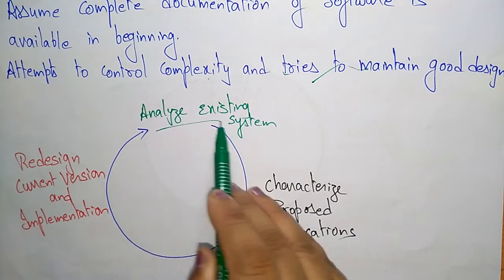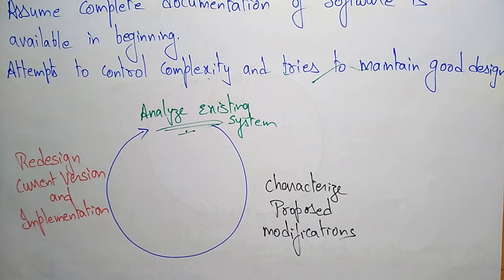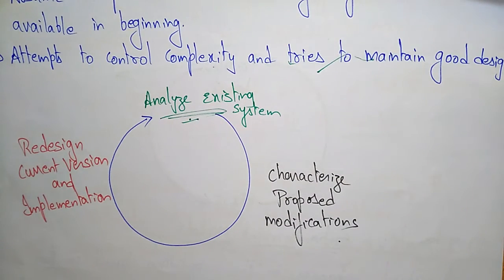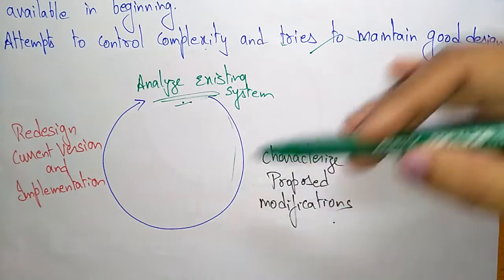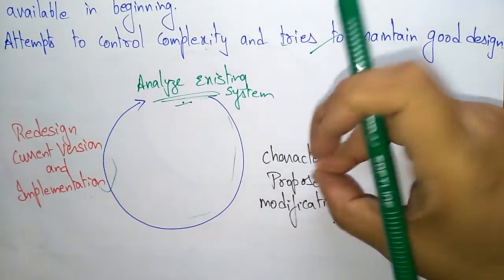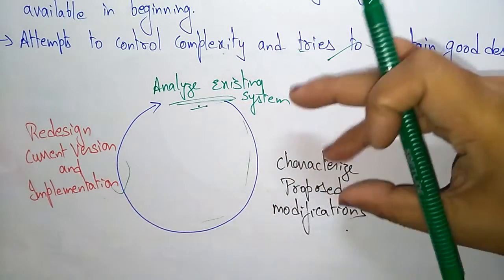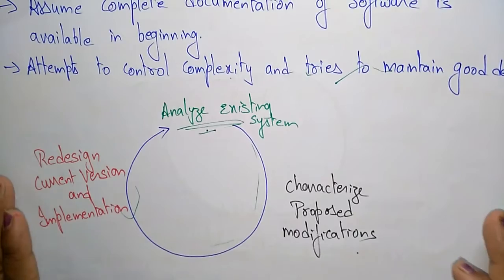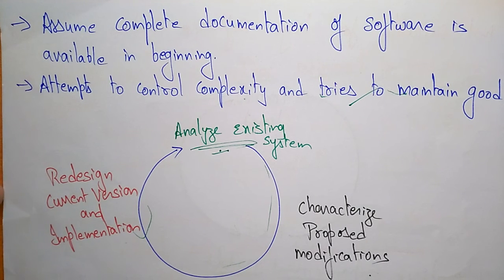First, you analyze the existing system by assuming complete documentation is available at the beginning. After that, you characterize the proposed modifications — what changes need to be done on the existing system. Once modifications are identified, redesign the current version and implement the project. The existing system is redesigned and the code is implemented. The next models will continue in the next video.